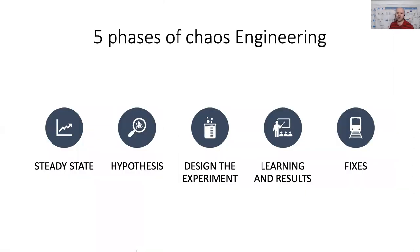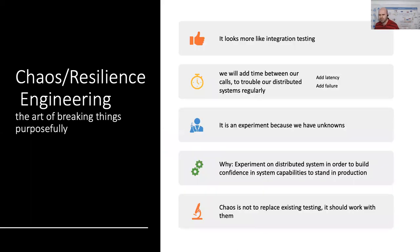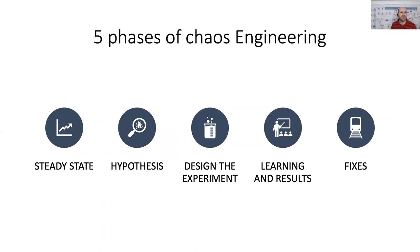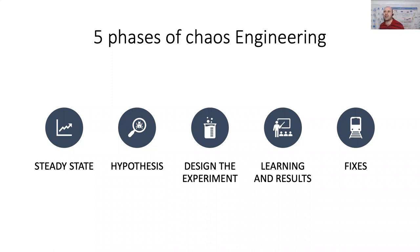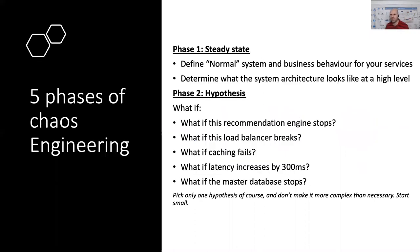There are five phases to perform chaos engineering. First: establish a steady state. Second: create a hypothesis. Third: design the experiment. Fourth: learning and results. Fifth: fixes. I want to focus on the first two. Creating a hypothesis means you have an idea of what can go wrong, you've chosen the exact failure to inject, and you have an expectation of how that failure will behave.